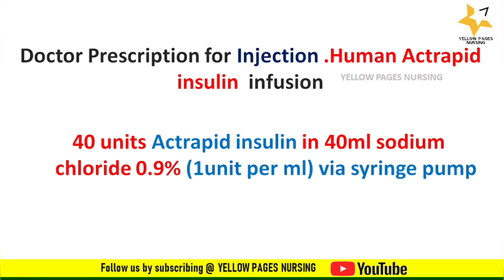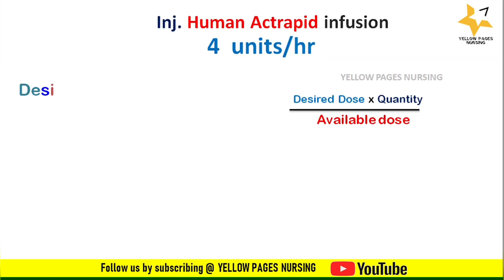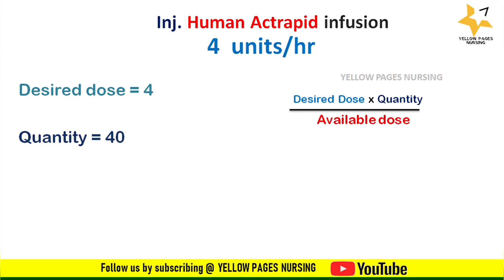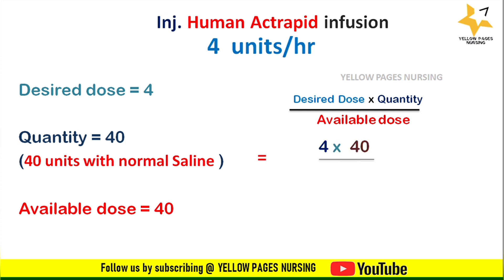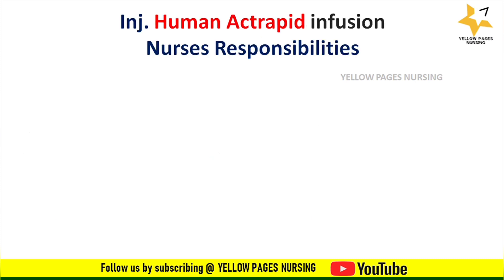Applying the same prescription using the other dilution ratio: 40 units actrapid insulin in 40 ml sodium chloride 0.9%, giving 1 unit per ml via syringe pump. The desired dose is 4, quantity is 40, available dose is 40. Applying the formula again gives 4 ml per hour.